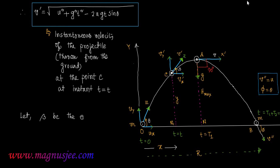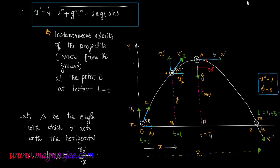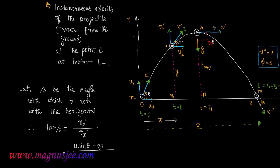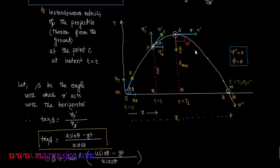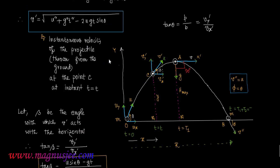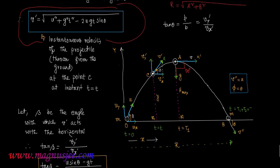Let beta be the angle with which v prime acts with the horizontal direction. Therefore tan beta equals Vy prime divided by Vx prime — that is perpendicular by base — so tan beta equals (u sin theta minus gt) divided by (u cos theta). Therefore beta equals tan inverse of (u sin theta minus gt) divided by (u cos theta). That is the angle subtended by the instantaneous velocity v prime at point C on the parabolic trajectory. So the instantaneous velocity is v prime equals the square root of u squared plus g squared t squared minus 2ugt sin theta.